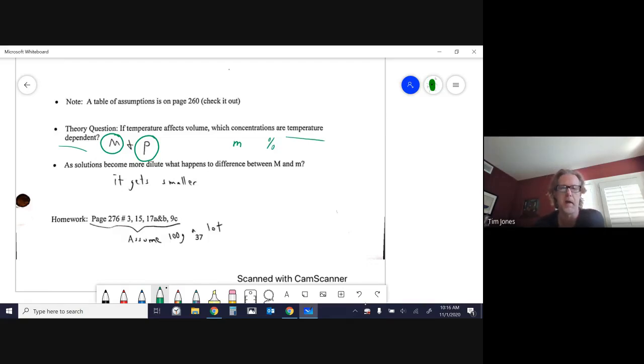Percent by mass would be similar. There's no volume. And all percents' cousins like parts per million would be the same if it's by mass. So you can start to see where molality can actually be quite useful just because it's not affected by temperature.